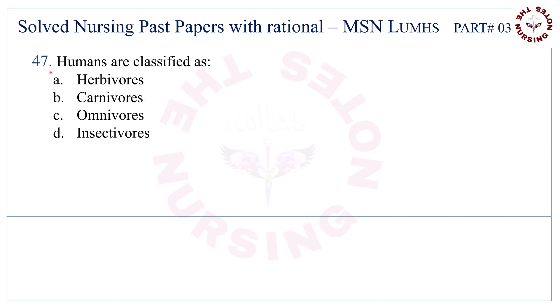Question number 47. Humans are classified as — the correct answer is C — omnivores.